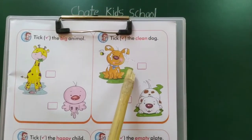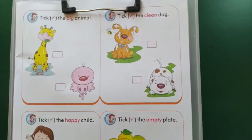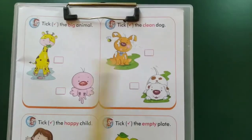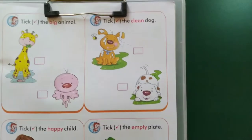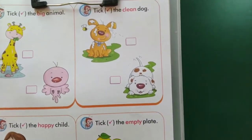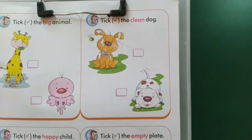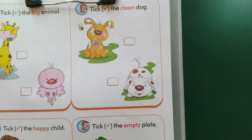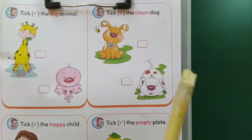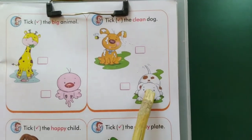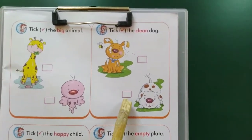Next box — tick the clean dog. Which dog is clean? Yes, this one is clean and the other one has a lot of mud on it, so that dog is dirty. Correct. And the clean dog is this one. So tick in this box.